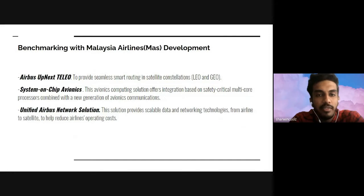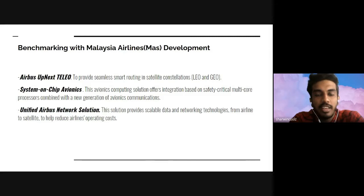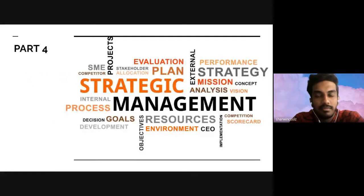Benchmarking with Malaysian Airlines development, MAS has three technology factors. First is Airbus UpNext Elio, which provides seamless smart routing in satellite constellations including LEO and GEO. Second is System on Chip AirVinex, which offers integration based on safety-critical multi-core processors combined with a new generation of AirVinex communication. Third is the unified Airbus network solutions, which provides cable and data network technologies from airline to satellite to help reduce airline operating costs.